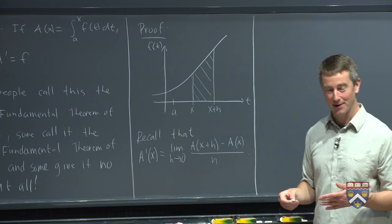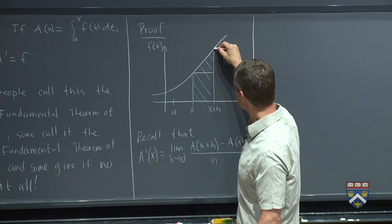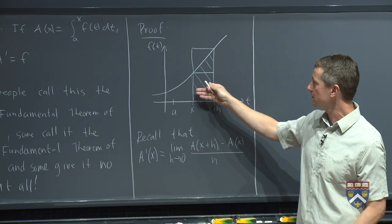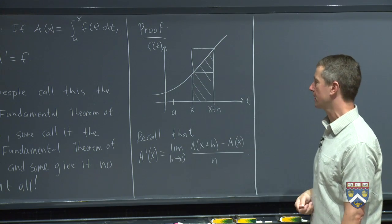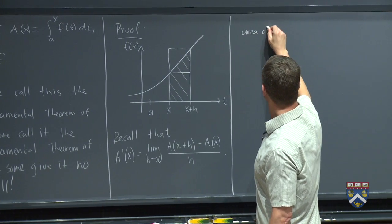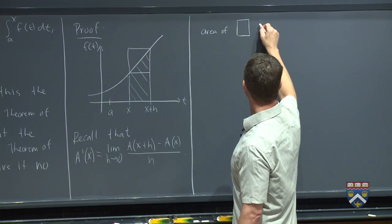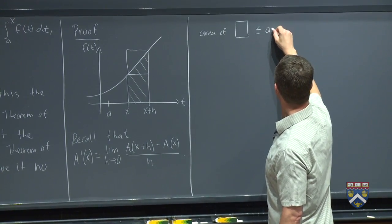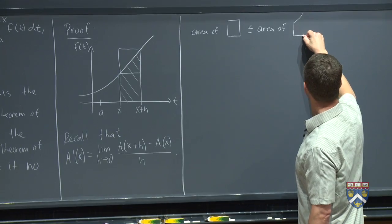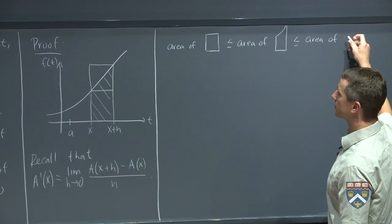Now, we have two ways of estimating areas, right? We have the left-hand sum and the right-hand sum. So I could draw a left-hand sum, and I can draw a right-hand sum. And now, I've got three different shapes. I've got a small rectangle, I've got the area under the curve, and I've got a big rectangle. So the area of the small rectangle is less than or equal to the area under the curve, which itself is less than or equal to another area, the area of the taller rectangle.